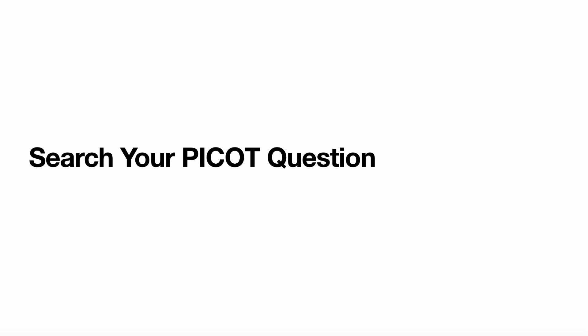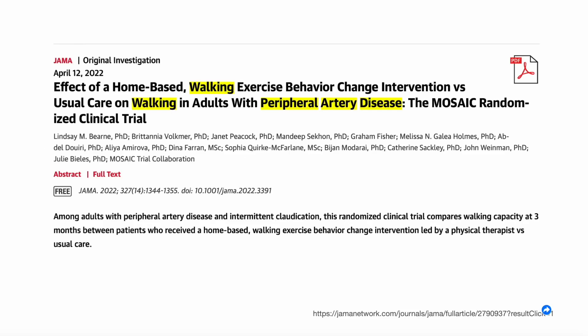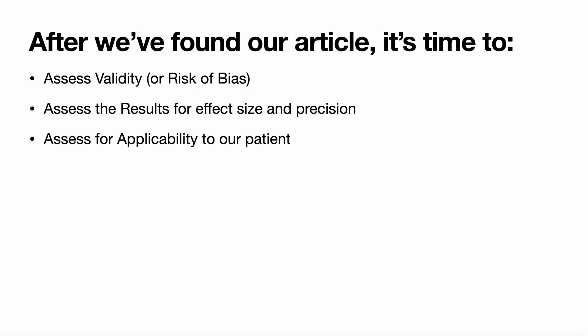So this is the time when we would search our PICO question. We take the important information and plug it into the search bar — we can plug it into PubMed. In this case, I plugged it into the Journal of the American Medical Association and got this article: the effect of a home-based walking exercise behavior change intervention versus usual care on walking in adults with peripheral artery disease, published in JAMA in 2022. We are assessing the article for its strength, validity, risk of bias, and whether the results could be applicable to our patient.